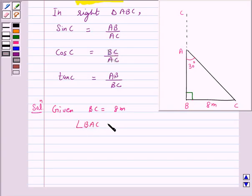Given BC is equal to 8 meters, and angle BAC is equal to 30 degrees. We have to find the height of the tree, that is we have to find AB.